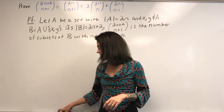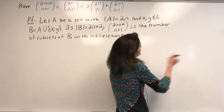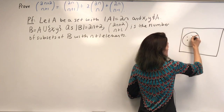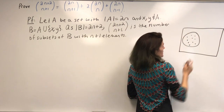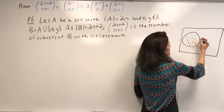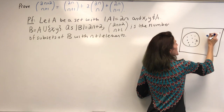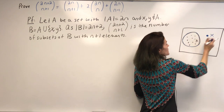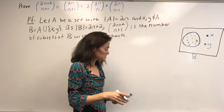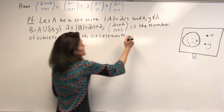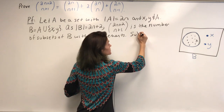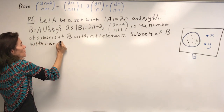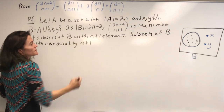Let's draw a Venn diagram so we can really see what's happening. Here's my set A — it has 2n elements. I take x not in A and y not in A, and B is A union those two. So B has 2n plus 2 elements. Subsets of B with cardinality n plus 1 come in three types.